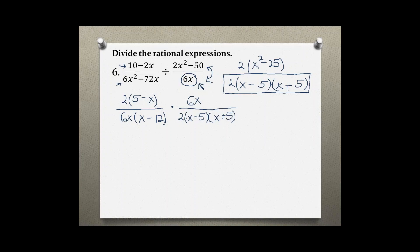Okay, so now I am ready to cross out whatever I can cross out. So I see a 2 on top and a 2 on the bottom. I see 6x on top and 6x on the bottom. And then also I see the 5 minus x and the x minus 5, but they are not actually the same.